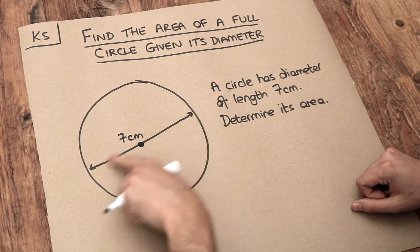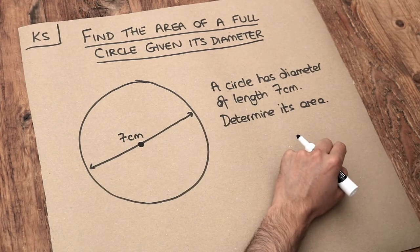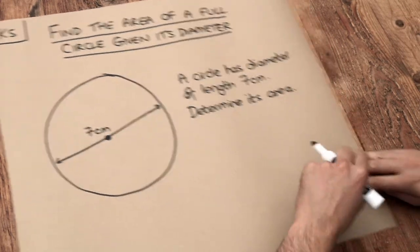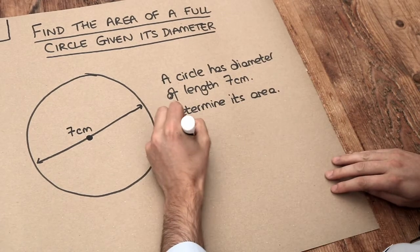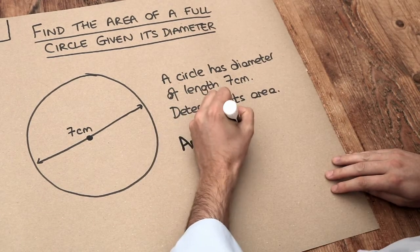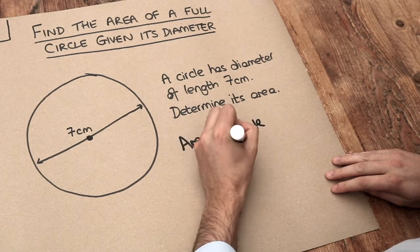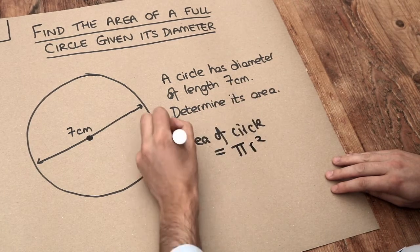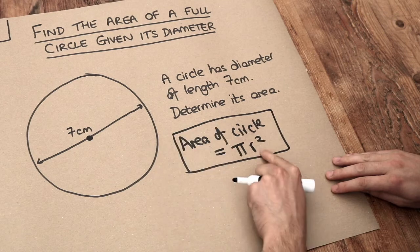So that 7 centimetres is the length of this diameter here and we want to find the area. Now in a previous video we saw that the area of a circle was equal to pi times the radius squared. So the R there stands for radius.